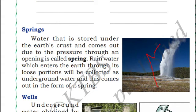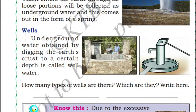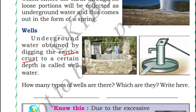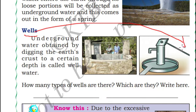Wells — underground water can be obtained by digging the Earth's surface or the Earth's crust. You can think of the Earth's crust as the surface of the Earth. When we dig the surface of the Earth to a certain depth, there is a possibility of getting water. One example of wells is a borewell. This is an example of a borewell, and this is an example of a traditional well.